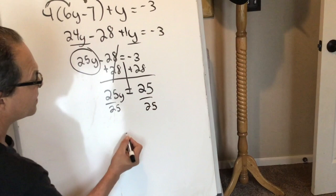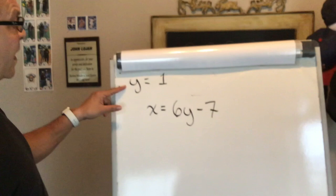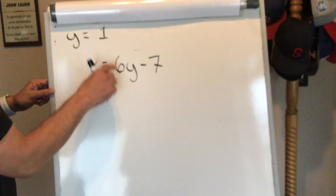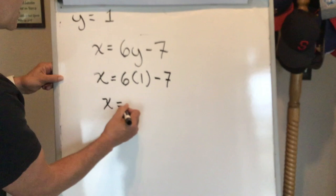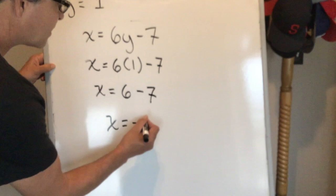Now that I know what y is, I have to solve for x. I'm going to replace the y in the second equation with 1, so x is equal to 6 times 1 minus 7, or x is equal to 6 minus 7, so x is equal to negative 1.